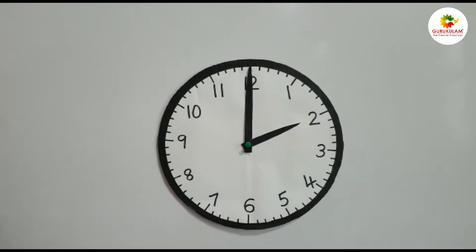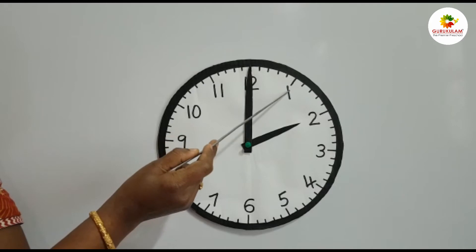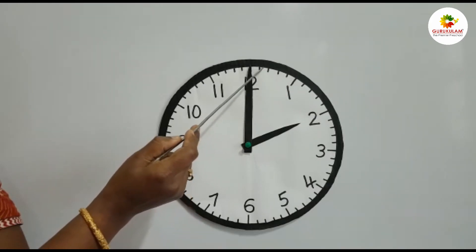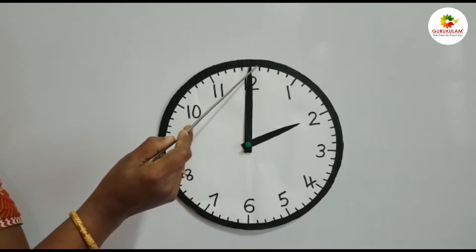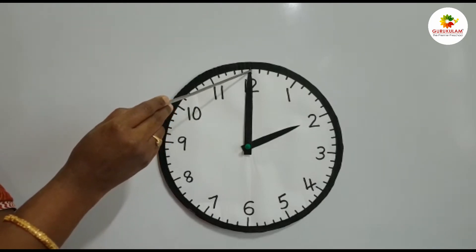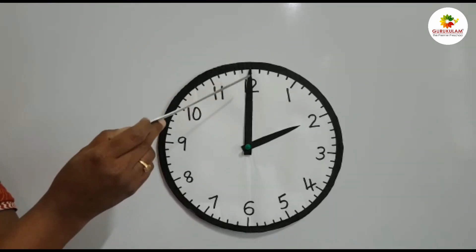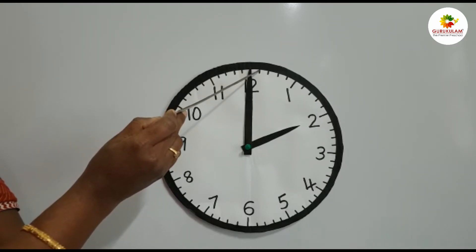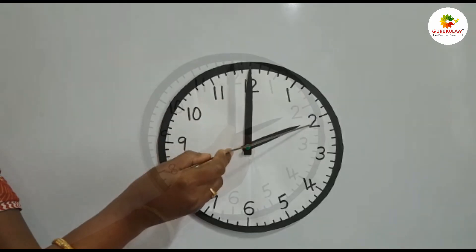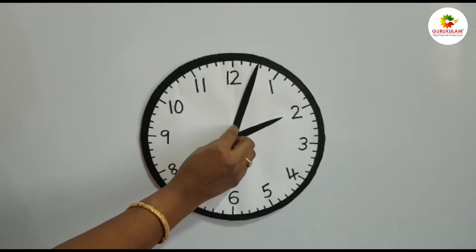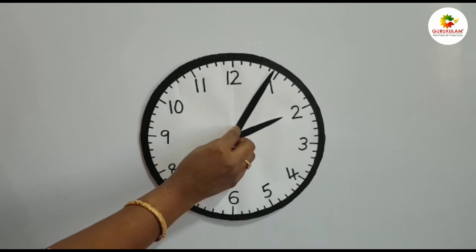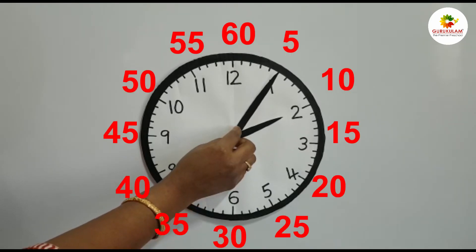Now, coming back to the minute hand, let's learn how to read the minutes. The space between two adjacent numbers has 5 divisions. Each division represents 1 minute. The first minute of every hour starts from number 12, and is called 0 minutes. Let's count each division between any two adjacent numbers: 1, 2, 3, 4, 5. So when the minute hand reaches number 1, 5 minutes are completed.